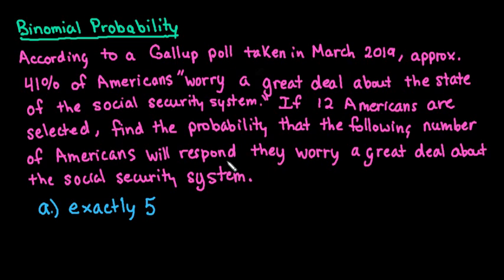If 12 Americans are selected, we want to find the probability that the following number of Americans will respond that they worry a great deal about the social security system. This is binomial because we can calculate each answer as a success or failure. A success means they respond that they do worry a great deal; a failure means they don't.